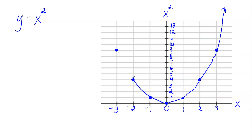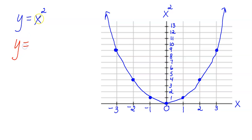We're going to call this graph in blue the parent function — the original function we're working with. Now I want to modify this function. For the first problem, I'm going to stretch this graph in blue — pretend like you're pulling up on it vertically, which makes the graph appear skinnier. To do that, I'll take y equals x squared and multiply the x squared by a number greater than 1, like 3.